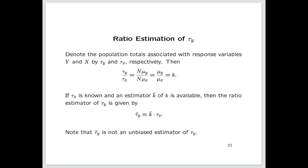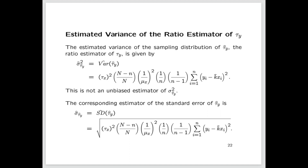τ̂_y is not an unbiased estimator of τ_y because k̂ is not an unbiased estimator of k. The estimated variance of the sampling distribution of τ̂_y involves the square of the total for the x's, the mean of the x's in the denominator, the population size, and the sample size.